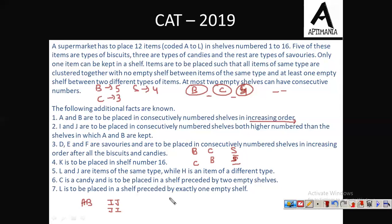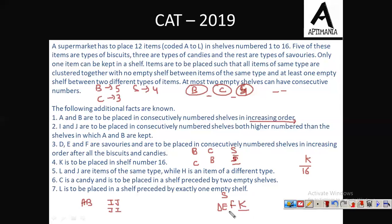D, E, F are savouries. K is to be placed in shell number 16. So the 16th shell is K. Since savouries are last: K is on shell 16, F is on shell 15, E is on shell 14, and D is on shell 13. These are the four savouries.